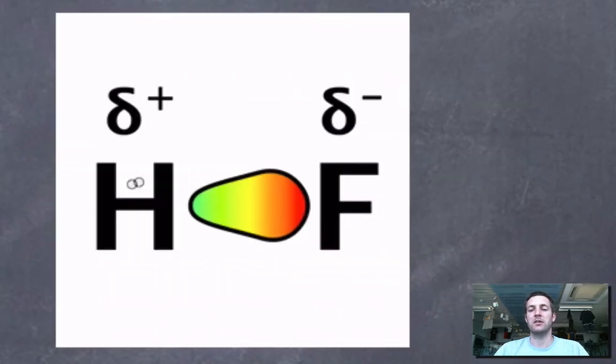We can see it here drawn in a slightly different way. We've got these lowercase greek deltas, meaning a little bit of positive charge at the hydrogen and a little bit of negative charge at the fluorine. And this thing here is showing you how the electron cloud has been distorted by the fluorine. It's pulled the electrons over towards itself, making itself more negative.